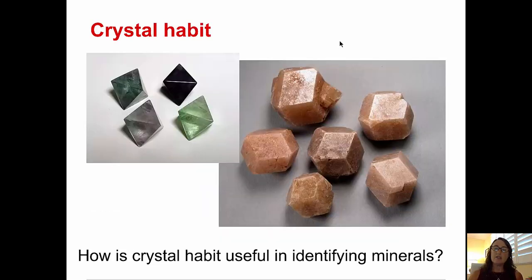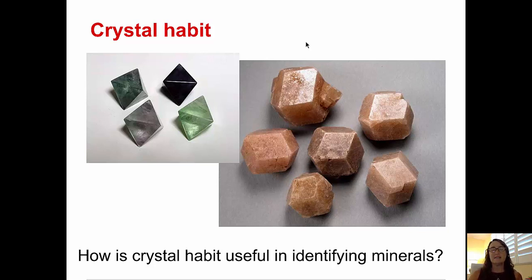Crystal habit can also help us diagnose which mineral we're looking at. For example, on the right-hand side you see dodecahedra of garnet, very characteristic of garnet crystals. On the left-hand side you see the eight-sided double pyramid of fluorite, also very characteristic. So when you see these shapes, they are diagnostic of particular mineral types.